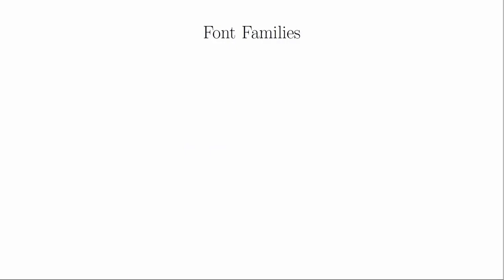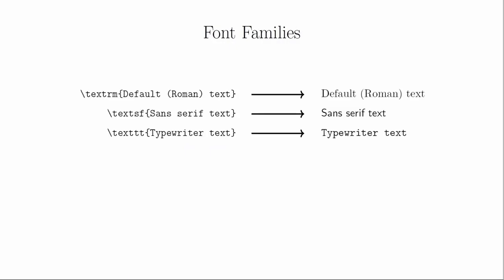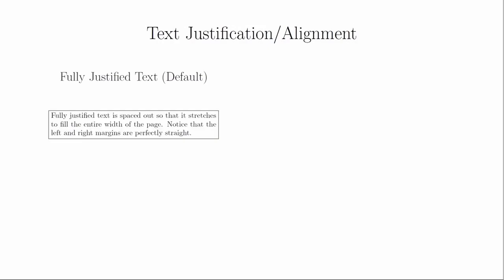LaTeX also gives you a set of options for changing the font itself. There are three basic font families: Roman, sans serif, and typewriter. The default is Roman, which is good enough for almost everything. I will use the typewriter font when I need a monospaced look. Notice that these are applied like functions and not as switches. The next type of text modifier that most people look for is alignment. The default behavior of LaTeX is to stretch the text out so that it fills the entire space between the margins — this is sometimes called full justification.